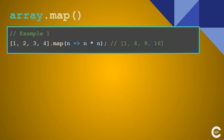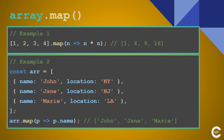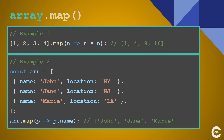Next method is map. Map basically maps each element of the array into a new element and returns a new array. In this case we are mapping each element into its square. The second example — we have an array of objects and we want to map each object into its name, and finally after executing map we have John, Jane, and Mary — an array of strings instead of array of objects.